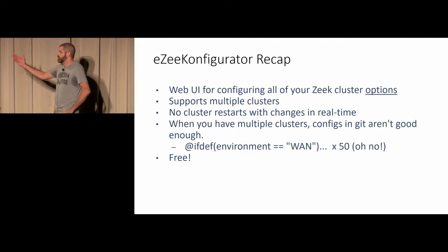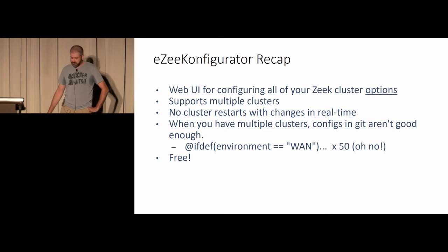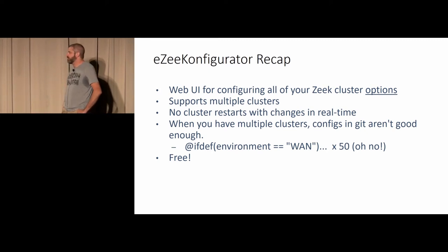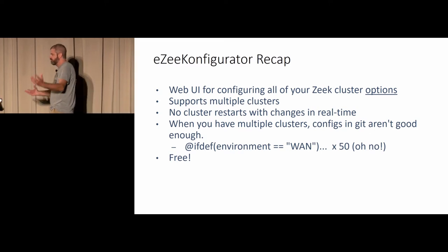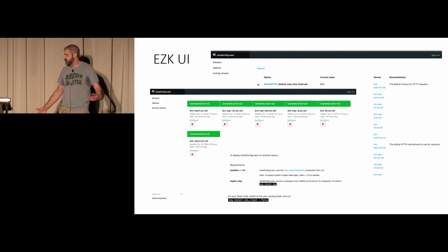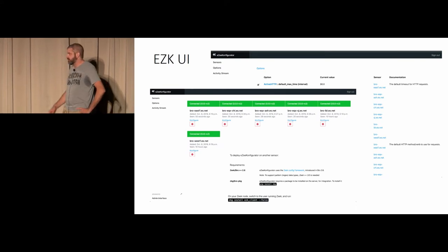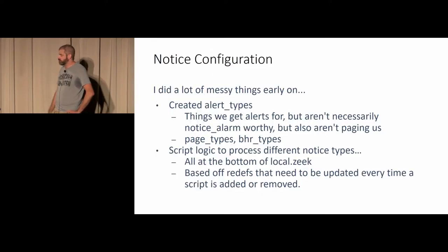So, to recap EZ Configurator: it's a web UI for configuring all of your Zeek cluster options, it supports multiple clusters, the clusters don't need to be restarted — it just happens in real time. When you have a lot of clusters, you don't want to have to ifdef your environment 50 times and deal with that in Git. This is what Vlad was showing yesterday — the web UI where you can have a bunch of clusters, and in the background are all the options you can define and tweak on the fly, so people who don't know the code can still tweak the options.